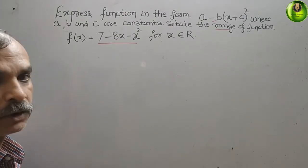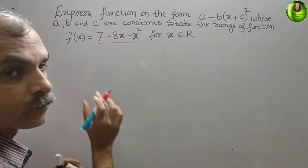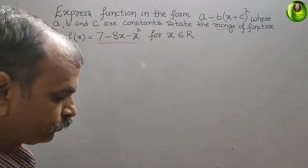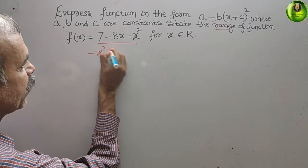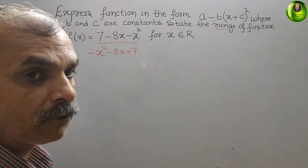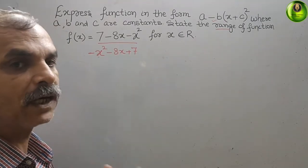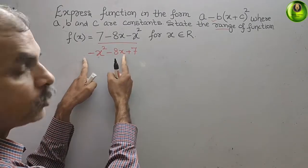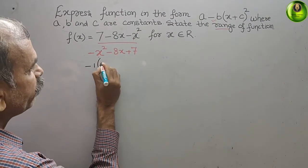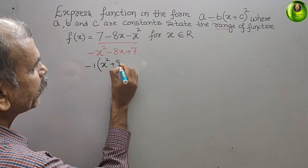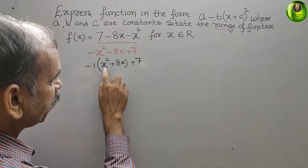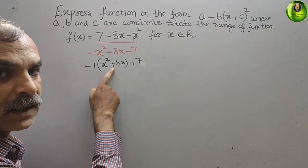First, we rearrange in standard increasing order. So it will be minus x squared minus 8x plus 7. Now we take minus 1 as common among the first two terms, giving minus 1 times (x squared plus 8x) plus 7.